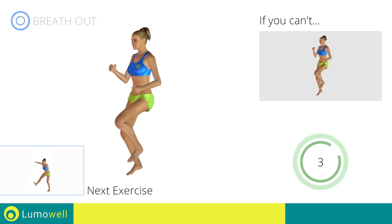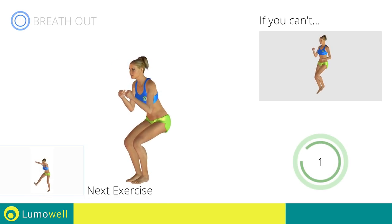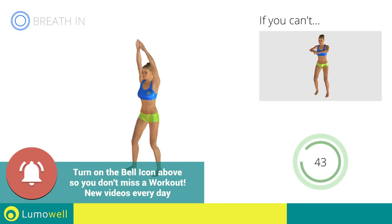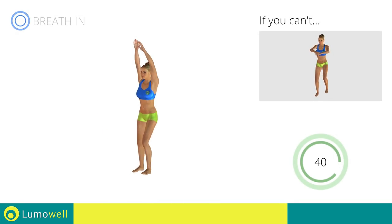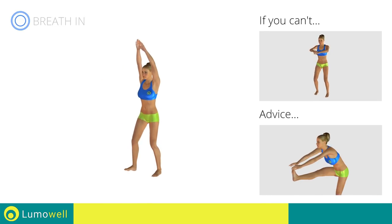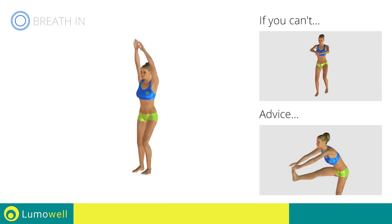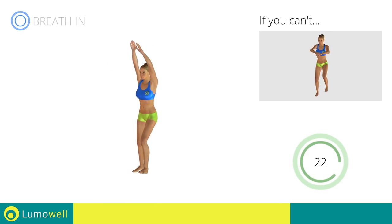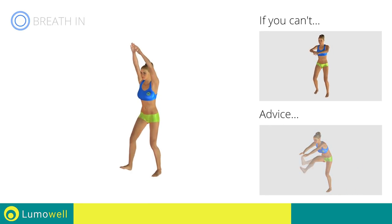Next exercise: standing crunch with outstretched leg. Go! If you cannot do it, try keeping your legs bent and touch your knees with your hands. Keep your shoulders and head straight throughout the whole exercise — try staring at a fixed point in front of you. Be sure not to bend your leg when you lift it.